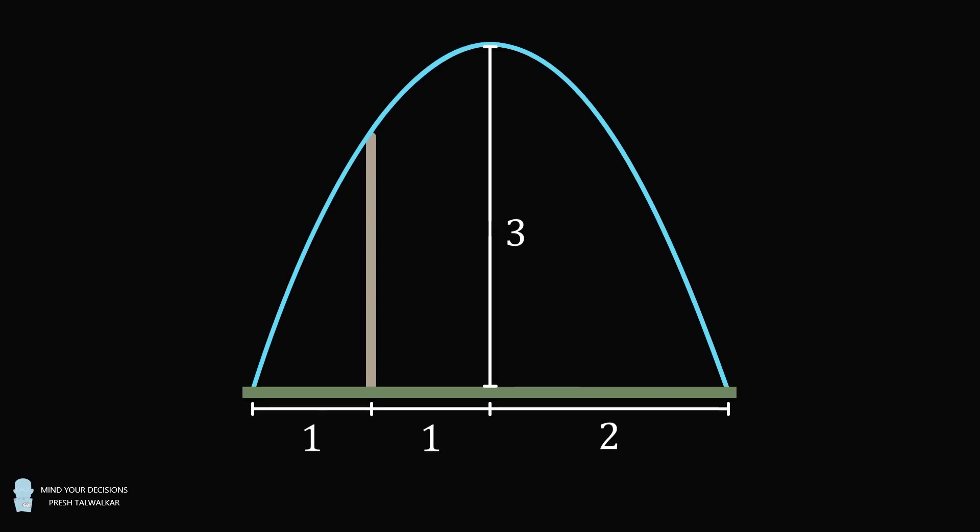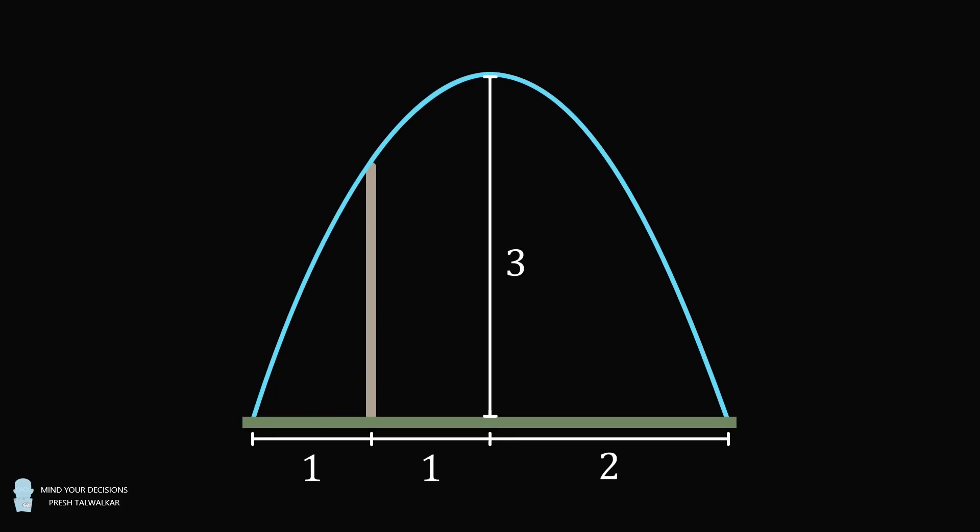We can now set up a coordinate system. Suppose the lower left point is (0,0). Then the highest point will be (2,3) and the point on the right will be (4,0). We want to solve for the top of the water fountain. This point will be (1,z) and we want to solve for the value of z. How do we do that?